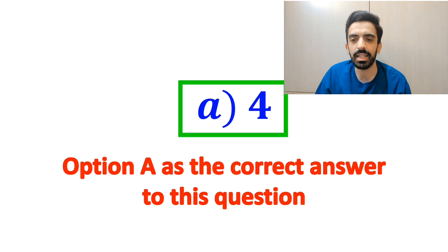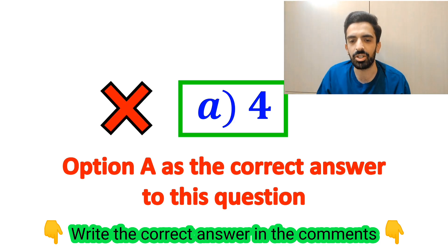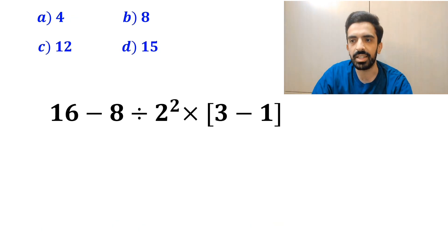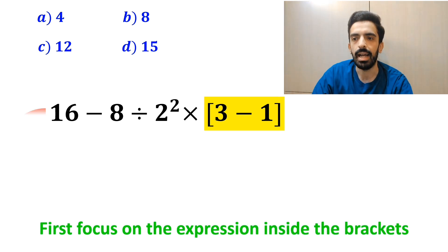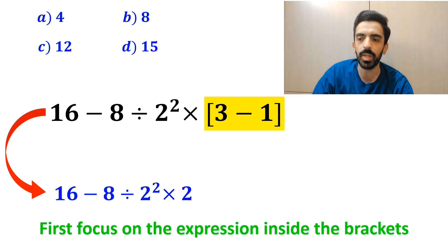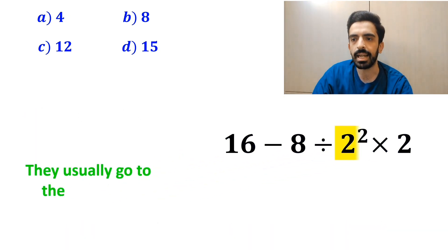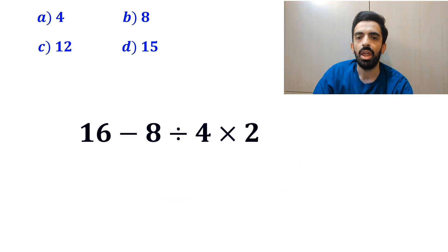But I have to say, we were tricked! And it's not the correct answer to this question. Some other people, when solving this question, first focus on the expression inside the brackets, and replace the whole expression with 16 minus 8 divided by 2 squared multiplied by 2. In the next step, they usually go to the exponent and simplify it to 16 minus 8 divided by 4 multiplied by 2.